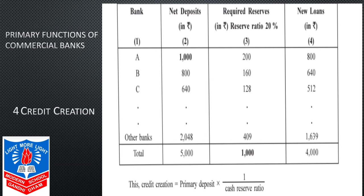People deposit money in their respective bank accounts. As per central bank guidelines, commercial banks are required to maintain a portion of total deposits in the form of cash reserves. With the help of past experiences, commercial banks know that not all depositors will turn up for withdrawal on the same day. Consequently, commercial banks lend the remaining portion of total deposits to the general public in the form of credit, loans, and advances. It is this second portion of total deposits that is responsible for credit creation.